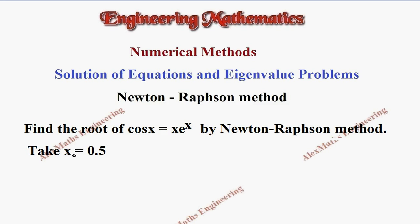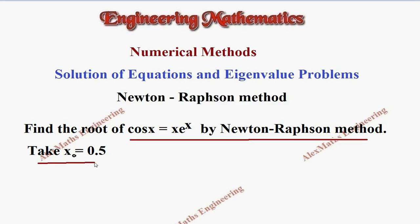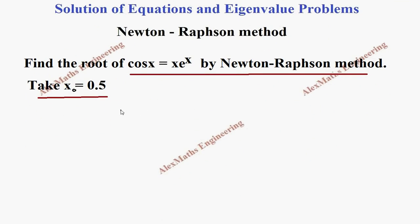Hi students, this is Alex. In this video we are going to find the root of the given equation cos(x) = x·e^x by the Newton-Raphson method, with the initial value x₀ = 0.5. We write f(x) by taking all terms to one side: f(x) = cos(x) - x·e^x.